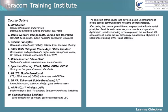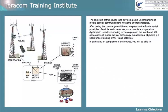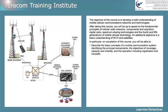An additional objective is a basic understanding of Wi-Fi and satellites. In particular, on completion of this course, you'll be able to describe the basic concepts of a mobile communication system, identifying the principal components, the objectives of coverage, capacity, and mobility, and the operation including registration and handoffs.